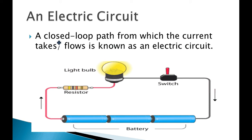Closed means that the wires should be connected to the battery and the bulb should glow. If the bulb glows, then the circuit is valid and correct. A closed path through which current flows is known as an electric circuit.